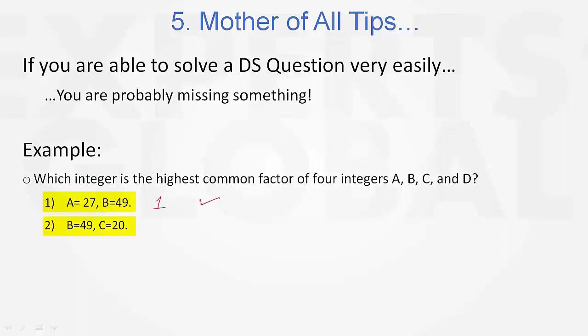And statement 1 leads us to an answer, that 1 is the highest common factor of a, b, c, and d, no matter what are the values of c and d. So statement 1 is sufficient.